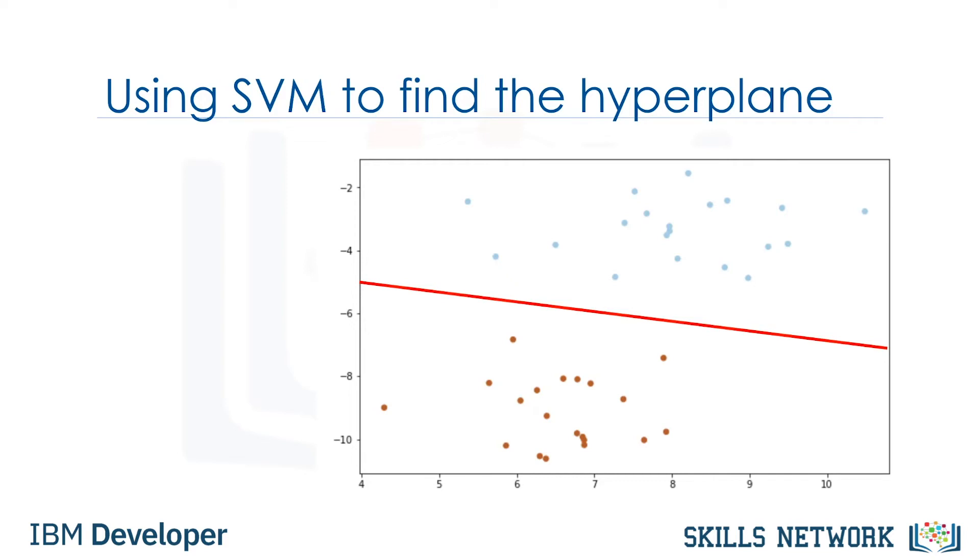As we're in a two-dimensional space, you can think of the hyperplane as a line that linearly separates the blue points from the red points. One reasonable choice as the best hyperplane is the one that represents the largest separation, or margin, between the two classes. So, the goal is to choose a hyperplane with as big a margin as possible.